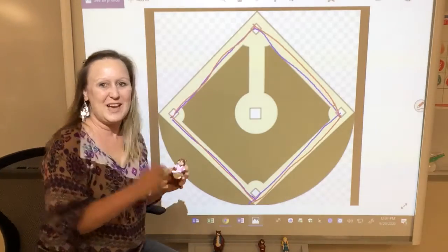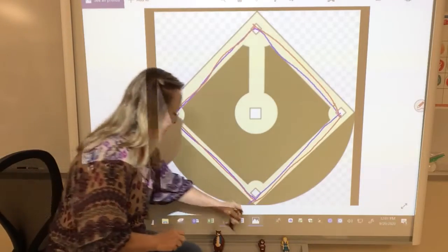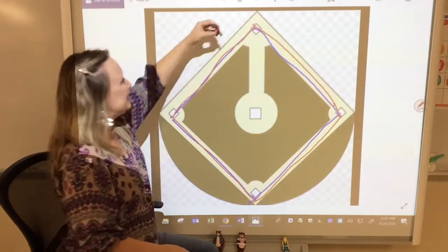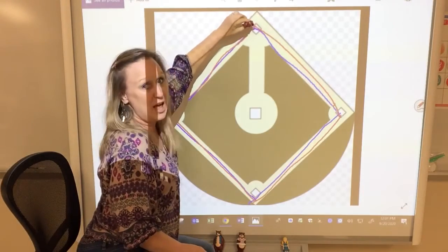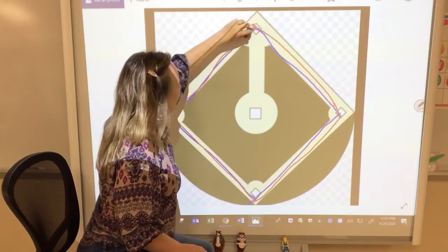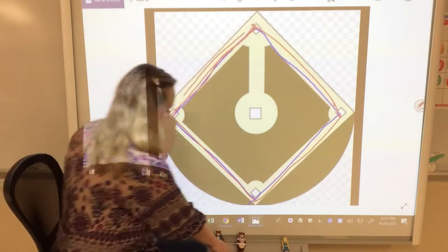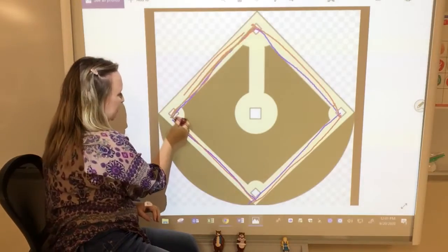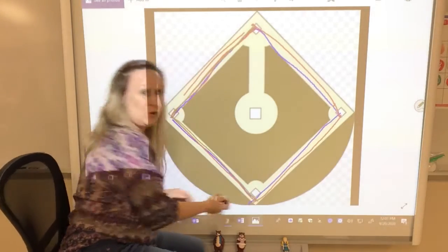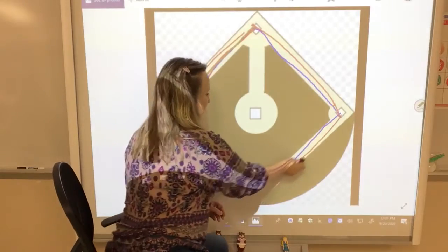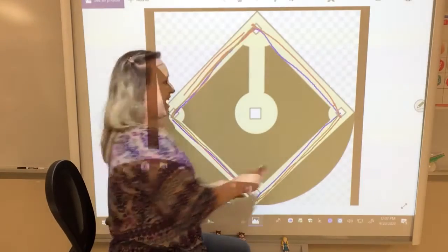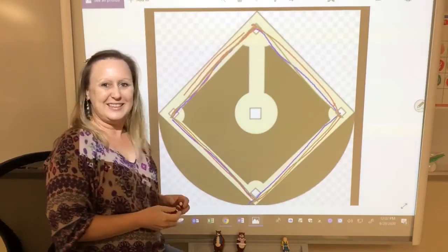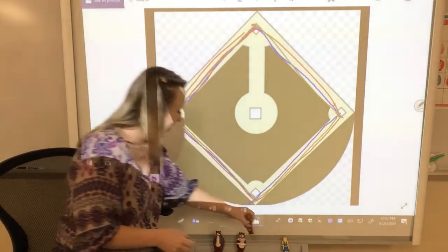Now we have two rhombus. Baby Bear's turn. What do we do? Start at the top at home. Run to first rhombus. Run to second rhombus. Run to third rhombus. And run to home rhombus. Thank you, Baby Bear.